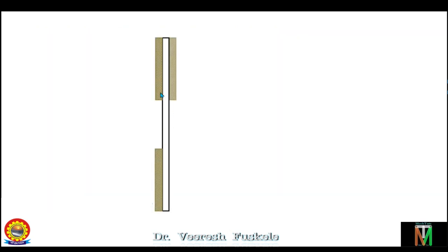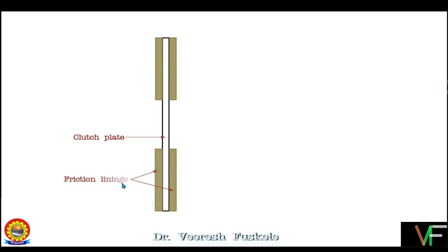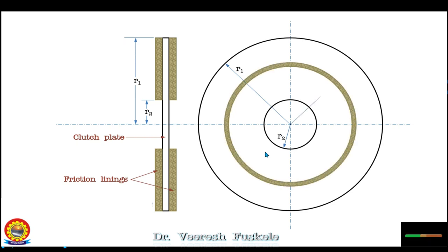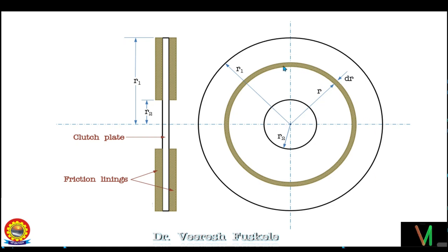Let us see the elementary analysis. Consider a clutch plate with friction lining. In the front view, r1 is the outer radius and r2 is the inner radius. We consider an elemental circular area at radius r with thickness dr, and we will analyze the effect on this elemental circular ring, then integrate over the total area of the friction lining from r2 to r1.